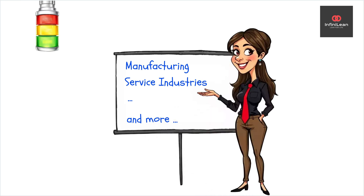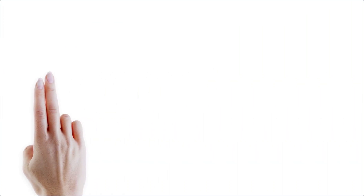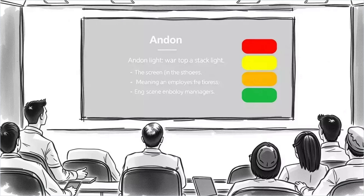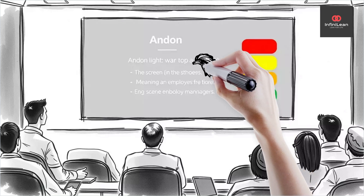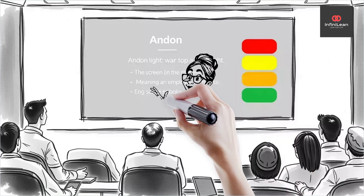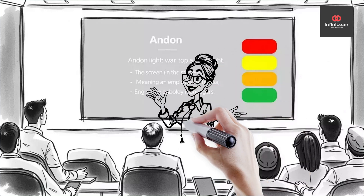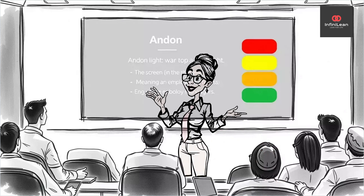Clarity and communication are key to successfully implementing an Andon system. Employees should be adequately trained to use the system and understand the significance of timely reporting. Furthermore, leadership must commit to acting upon Andon alerts to ensure agile problem solving.